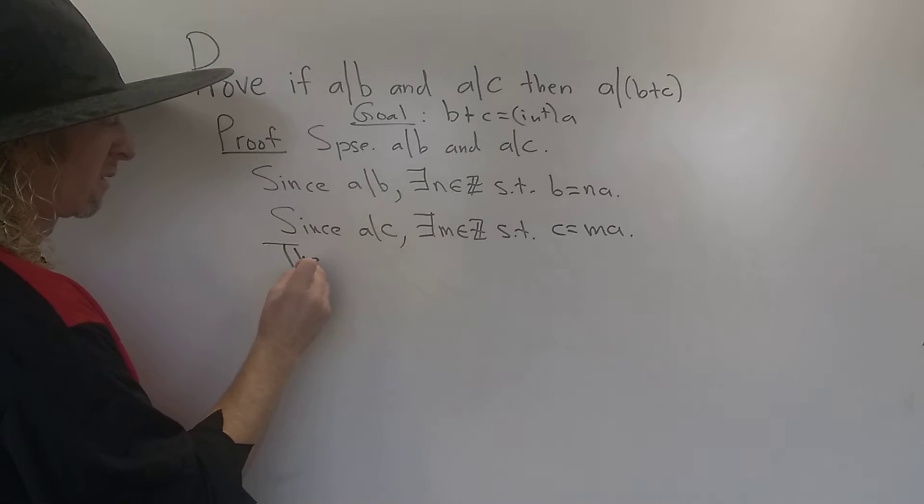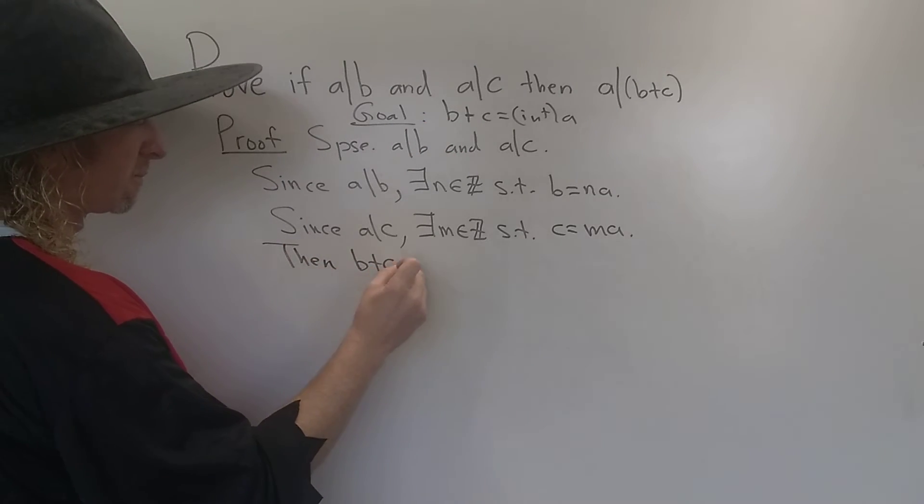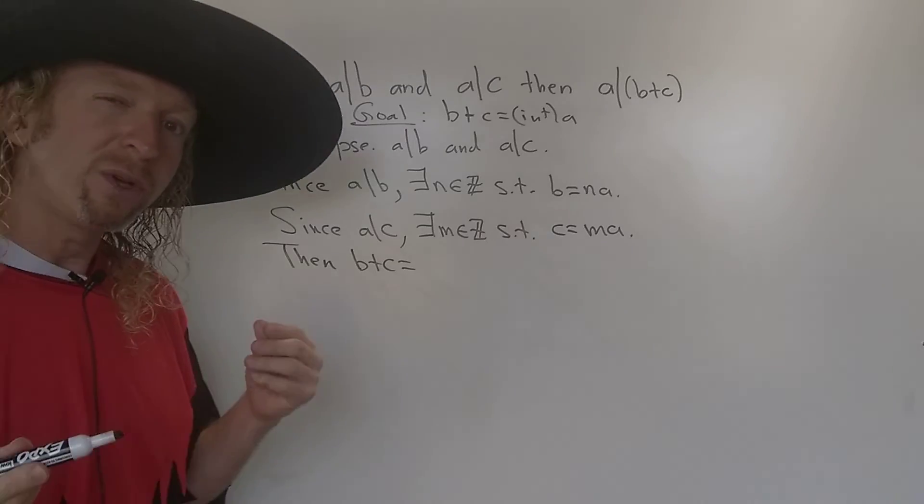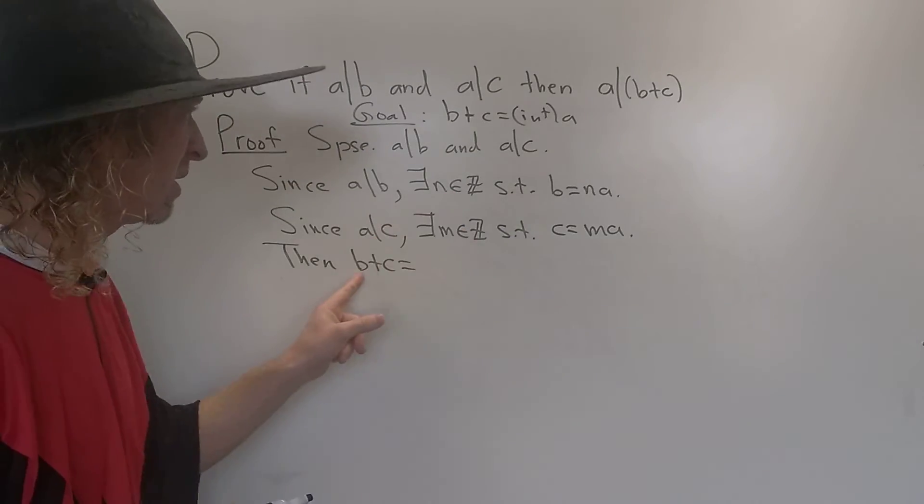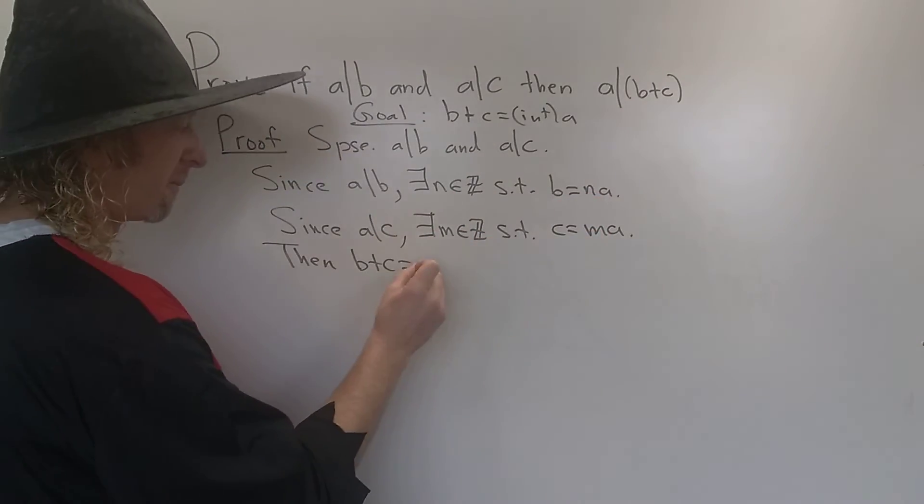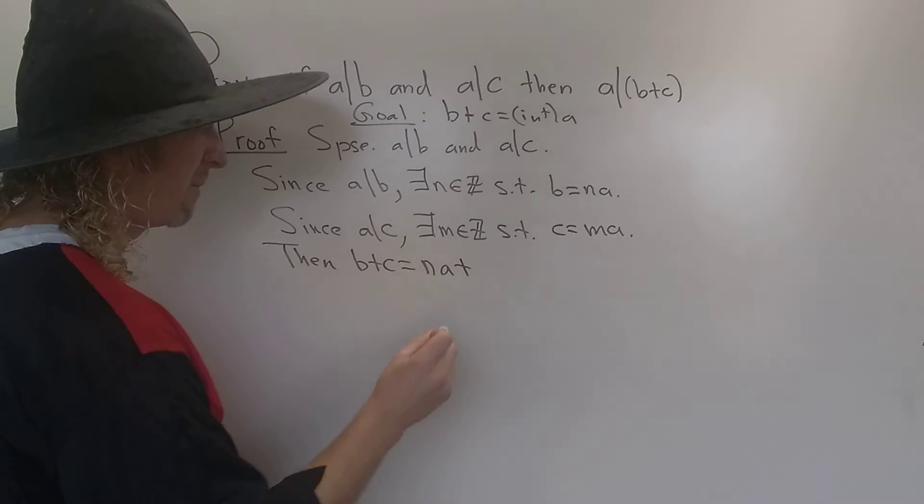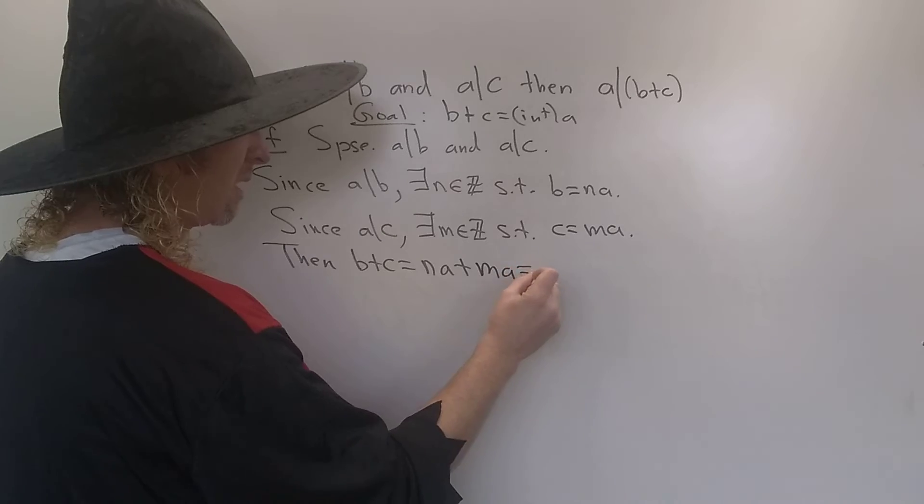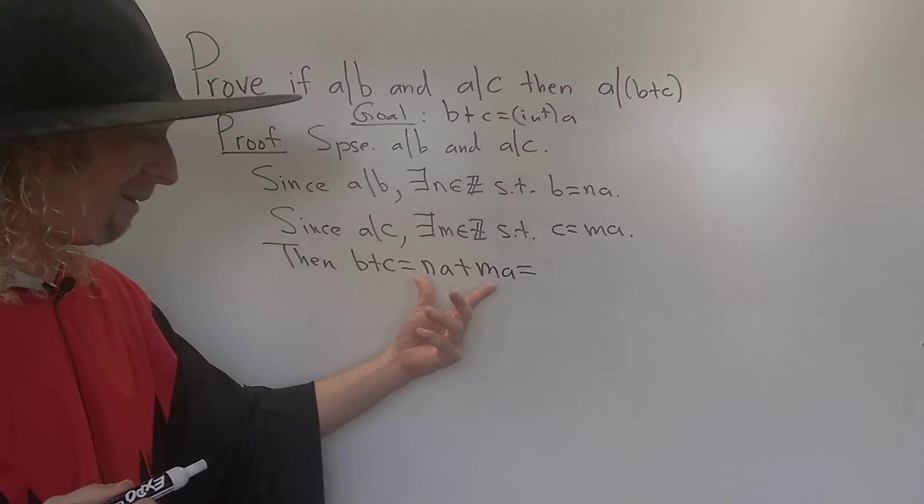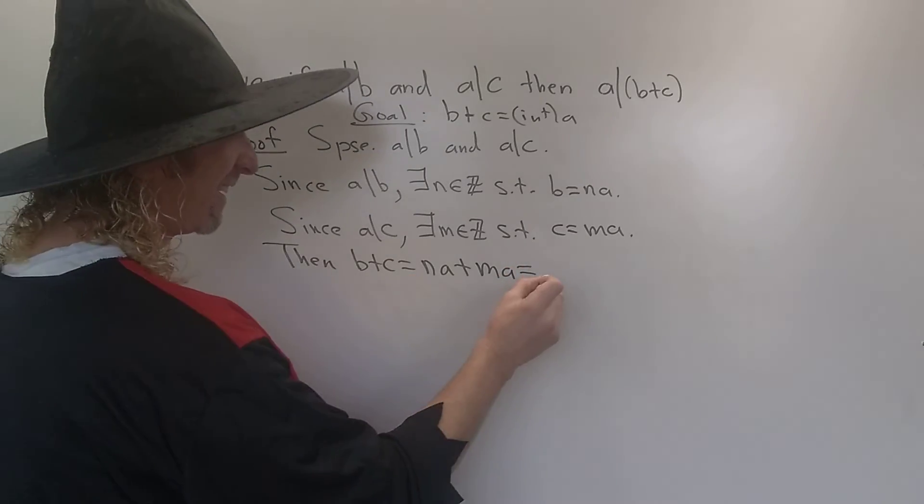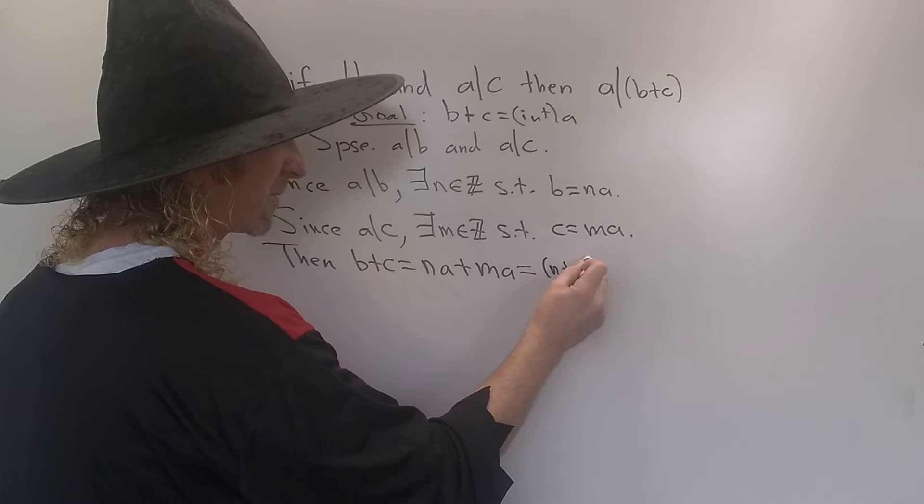So then B plus C, well, what is B plus C? Well, we do the only thing we can do. B is NA, so we replace it with NA. Plus C is MA, so we replace it with MA. And then we can pull out the A. N plus M times A.